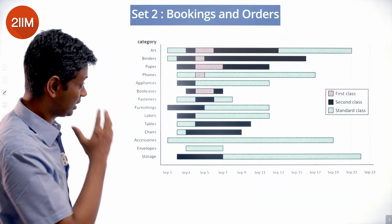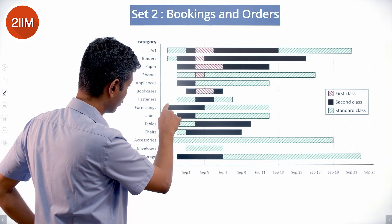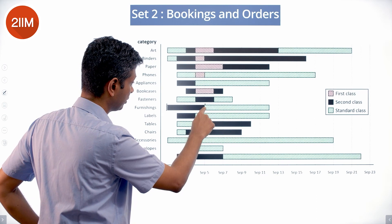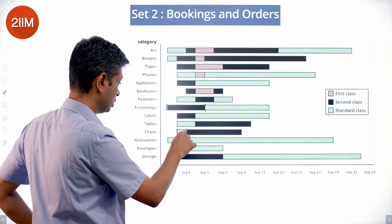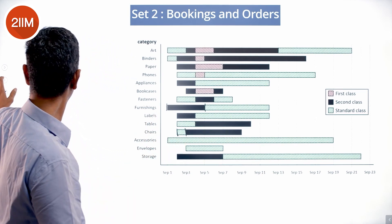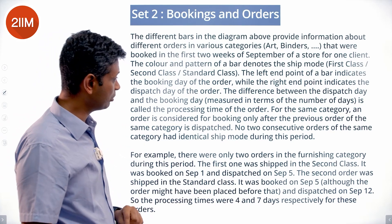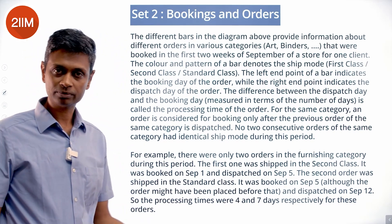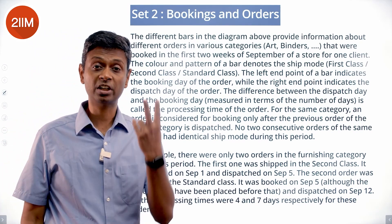For example, furnishings were booked on September 1 and shipped on September 5. Chairs were booked on September 2 and shipped on September 3. The difference between the dispatch day and the booking day, measured in number of days, is called the processing time of the order. So if you book on September 2nd and ship on September 4th, the processing time is two days.